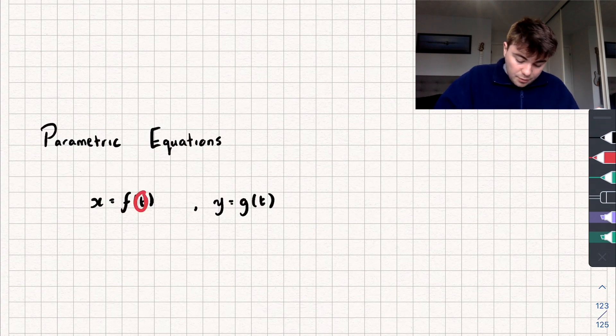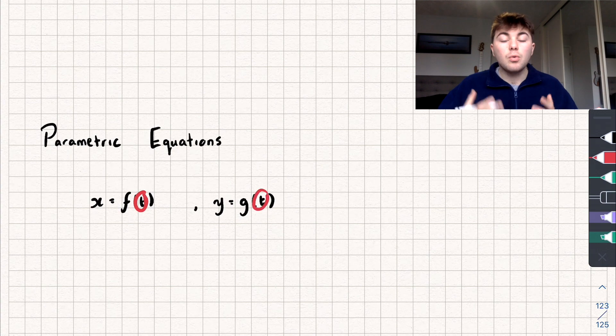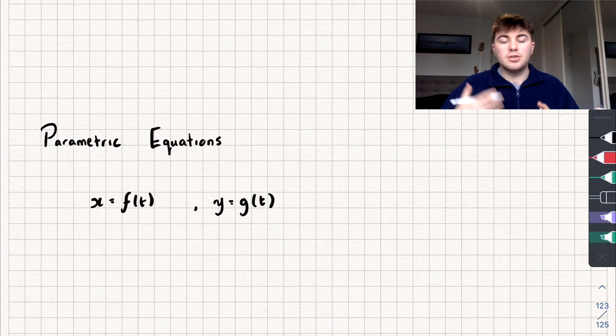So we call this value of t inside the function our parameter. And so as that value changes, that's going to change our values of x and y.